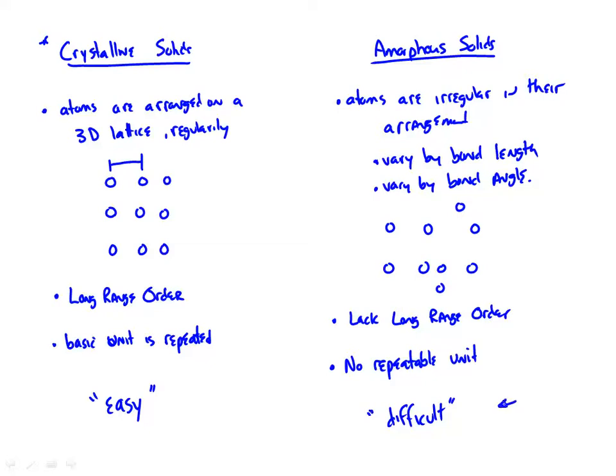I did my PhD on amorphous compounds, and I always laugh in hindsight — we titled the thesis 'The Structure of Amorphous Compounds,' which is kind of like saying 'the color of gray.' Gray doesn't have a lot of color. Structure and amorphous really don't go together. When we say 'structure' for amorphous compounds, we're talking about averages and things like that — but it's still kind of strange.